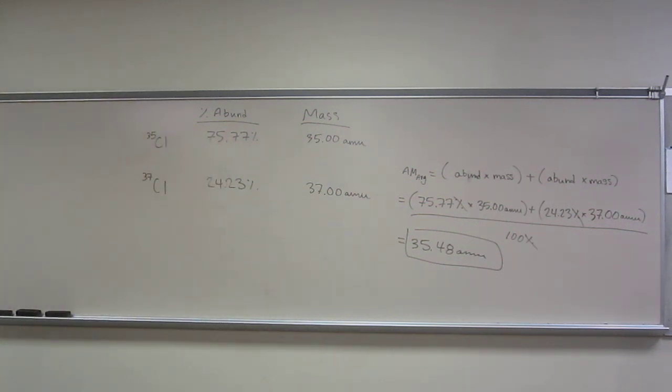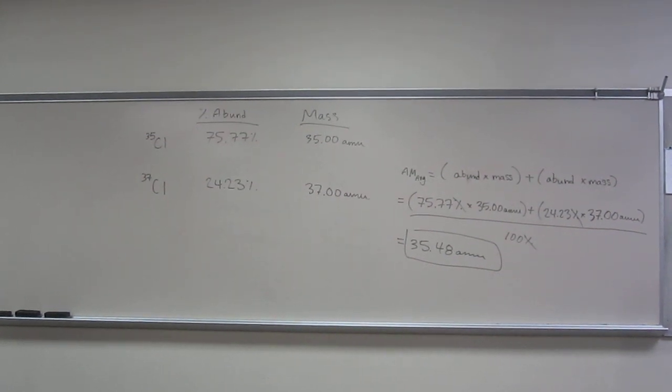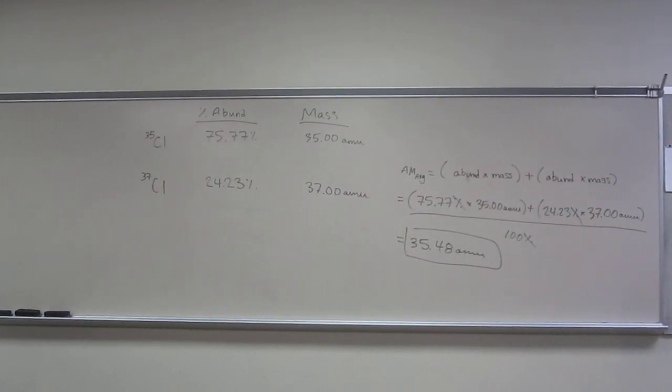Okay? Is everybody okay with doing something like that? And if you compare it up to the periodic table, you'll notice that it's a tiny bit different because there's different isotopes of chlorine that they didn't include in this problem. Questions about doing something like this? Pretty cool? Good?